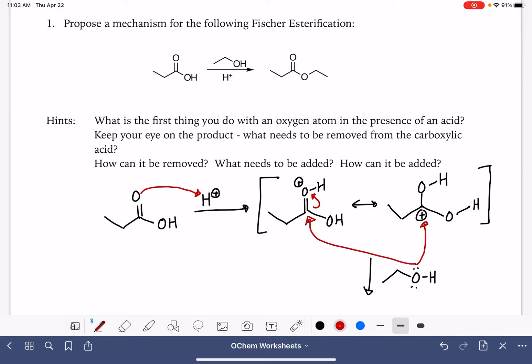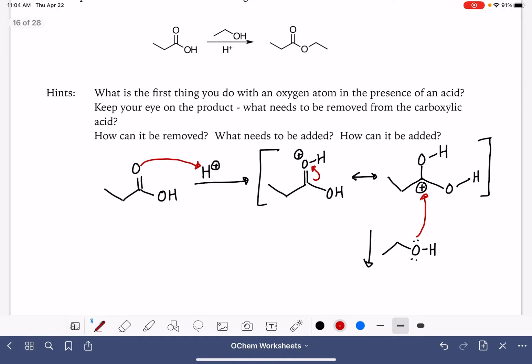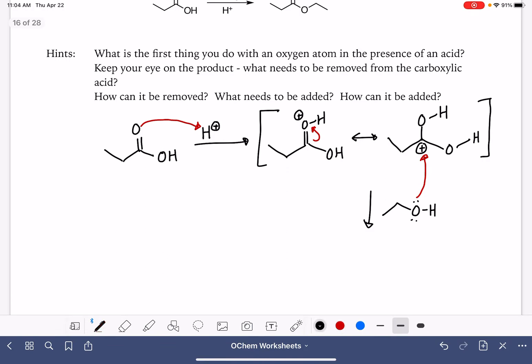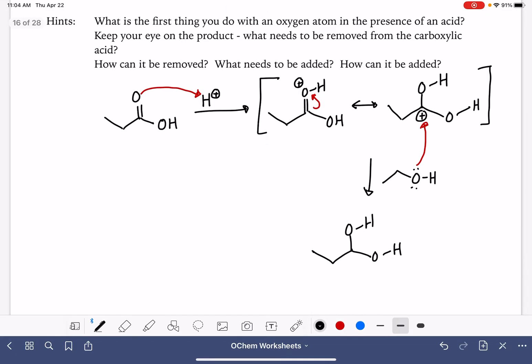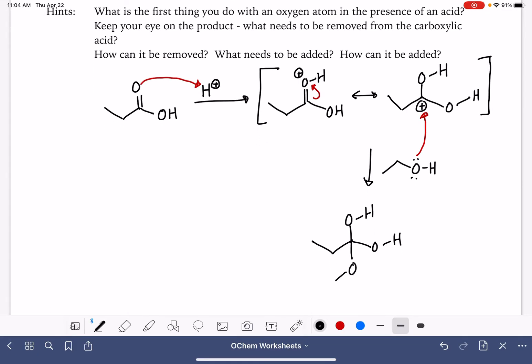You could also show it just attacking straight from this structure. It's not really necessary to draw out that resonance structure. This is what used to be the carboxylic acid, and here is the alcohol that has attacked it. Positive formal charge on the oxygen of the alcohol because it has three bonds.